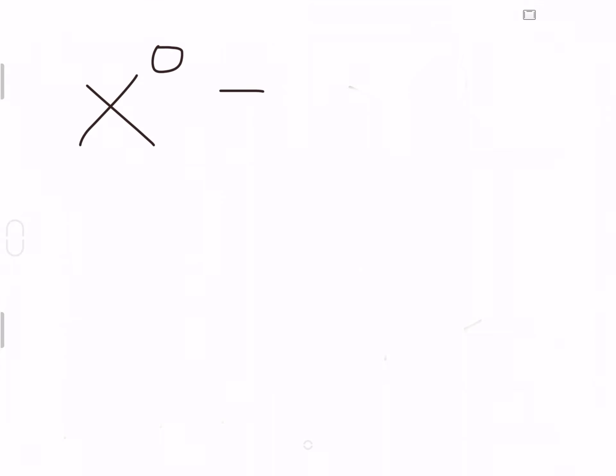Here's my unrelated example. We all know that x to the 0 is equal to 1. You may have asked yourself why that is — it doesn't make any sense. The answer is: it has to be. There's just nothing else for x to the 0 to be; it has to be 1. We can't have it be anything else. Let me show you why.